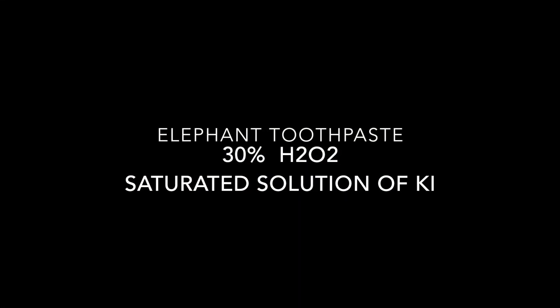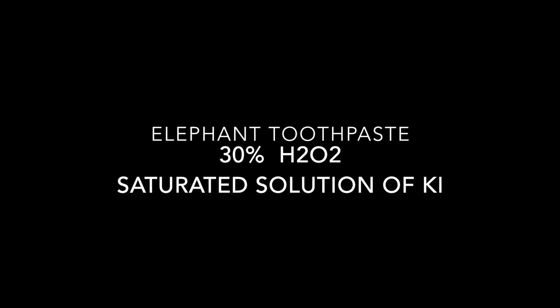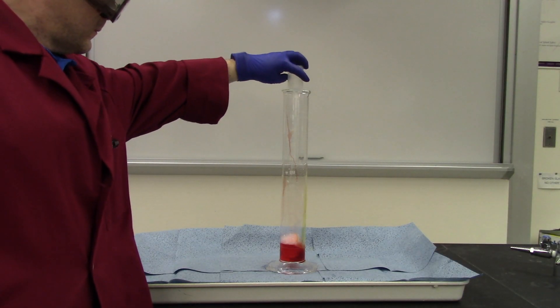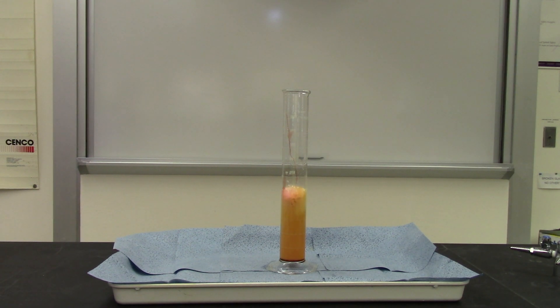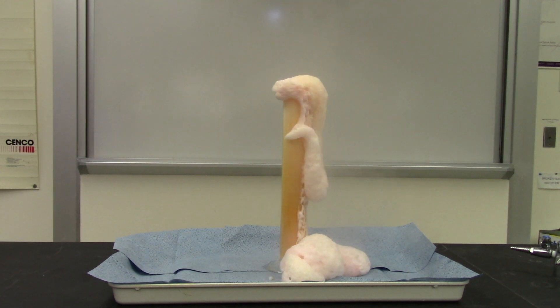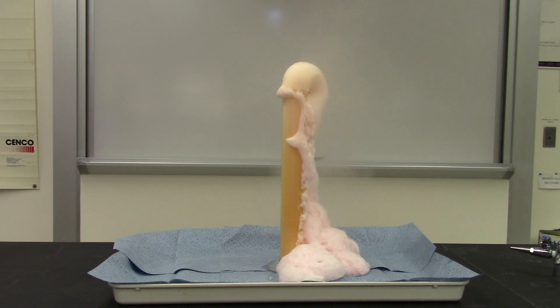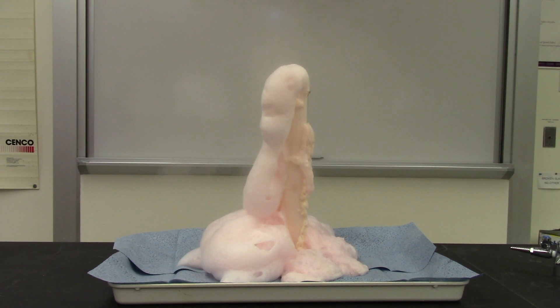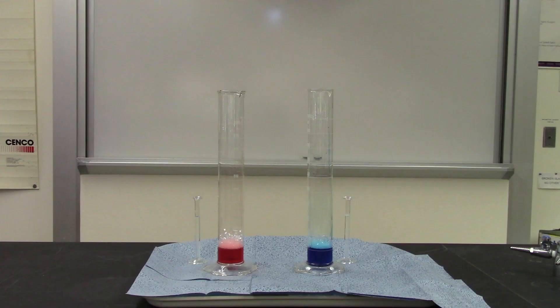Thirty percent hydrogen peroxide — this is chemistry-grade hydrogen peroxide. Danger, danger, danger! Warning: 30% hydrogen peroxide will cause severe chemical burns and permanent eye damage including total vision loss. Damage to property — walls, floors, plumbing — is likely. Do not attempt this experiment. Watch this. That kind of speaks for itself — that's really cool. Now, that's not smoke you're seeing — that is steam. This reaction gets extremely hot. Do not do this at home.